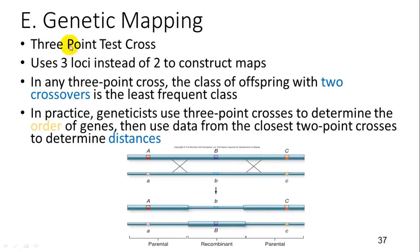You can do the same thing with three genes using three loci to construct maps of where genes are on the chromosome. In any three-point cross, the class of offspring with two crossovers is the least frequent. The most frequent are those without crossing over, then two middle classes, and the rarest is the double crossover.